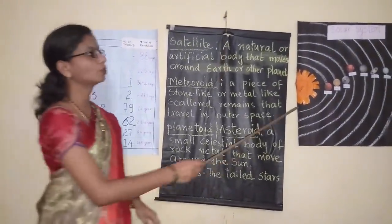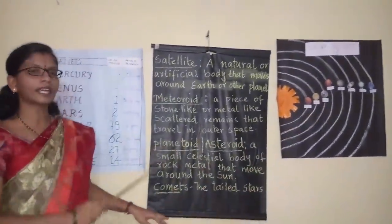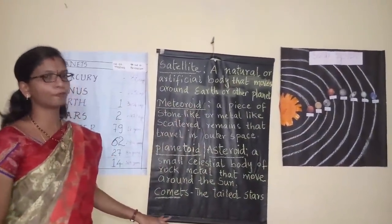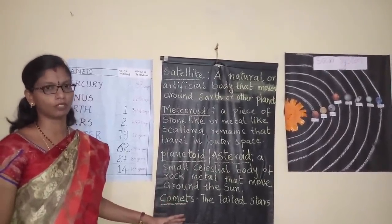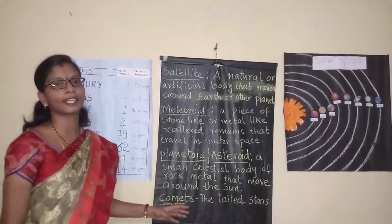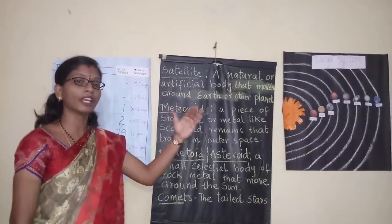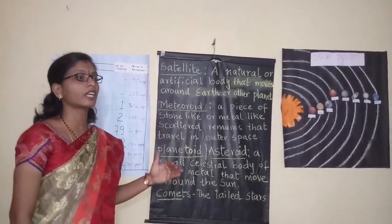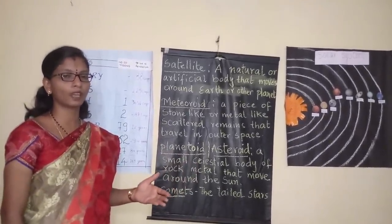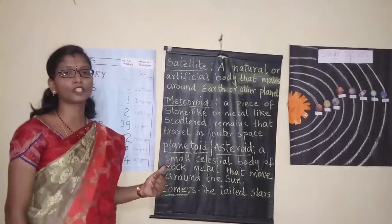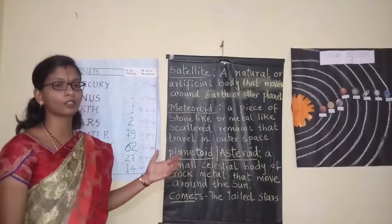The satellite moves around the earth or other planets. These satellites can be artificial also. Natural satellites are known as moons, whereas artificial satellites are objects sent into space from where they send signals. They help in communication through internet, telephone, mobiles, weather forecasting, television, and radio signals. Everything is possible because of the satellites.